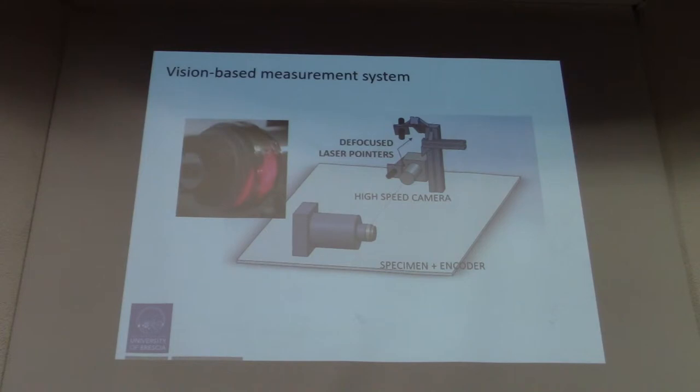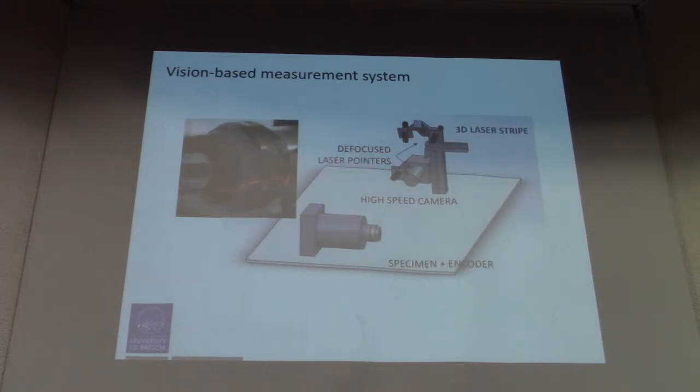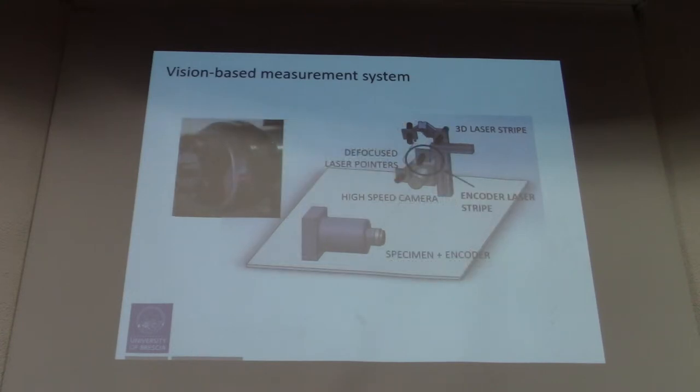Then we have a 3D laser stripe because we can measure the damage of the specimen using this 3D laser blade, which is needed to measure the length of the linear profile of the encoder to know the angular position of the rolling specimen.